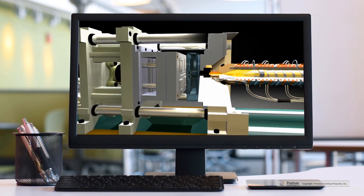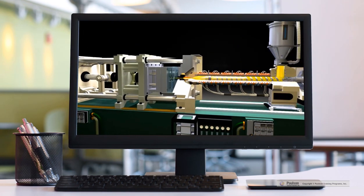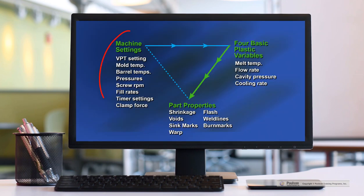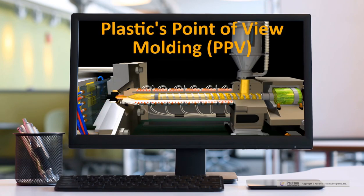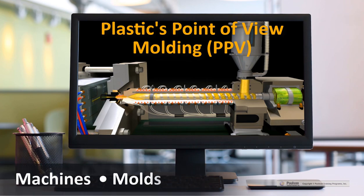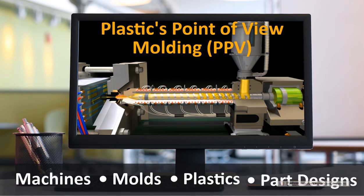If you can understand why the plastic is reacting the way it is, you can then determine which machine control to adjust to fix the problem. The plastics point of view molding, or PPV, can be applied to all machines, molds, plastics, and part designs. Now that's scientific molding.